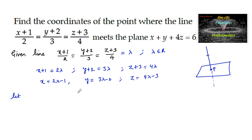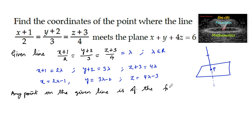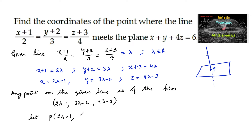So any point on the given line is of the form (2λ−1, 3λ−2, 4λ−3), representing the x, y, and z coordinates respectively. Let us consider this point also lies on the plane.